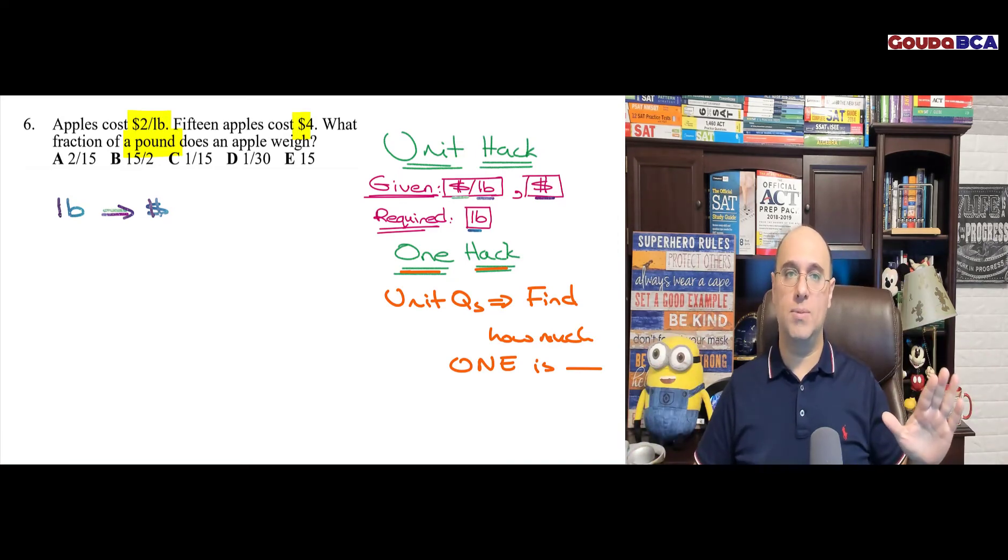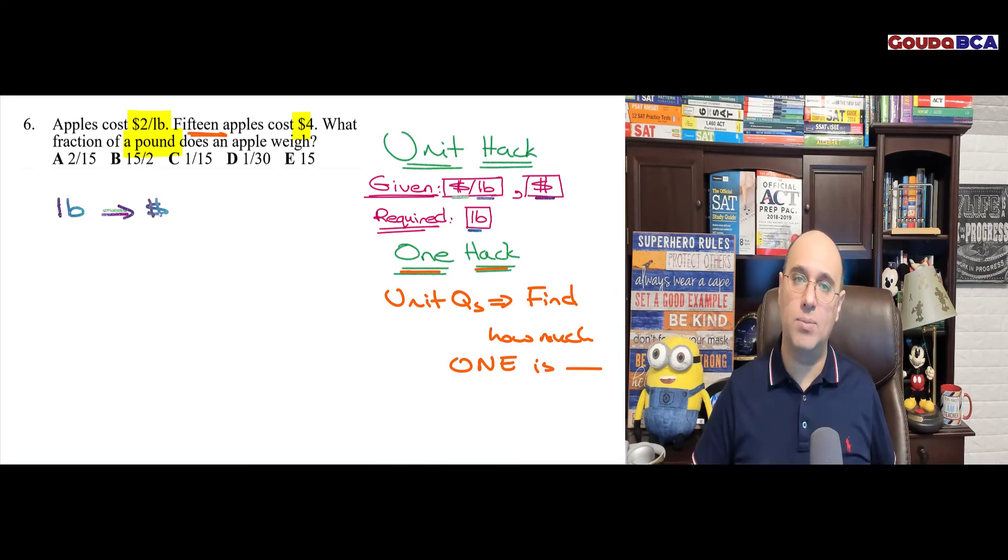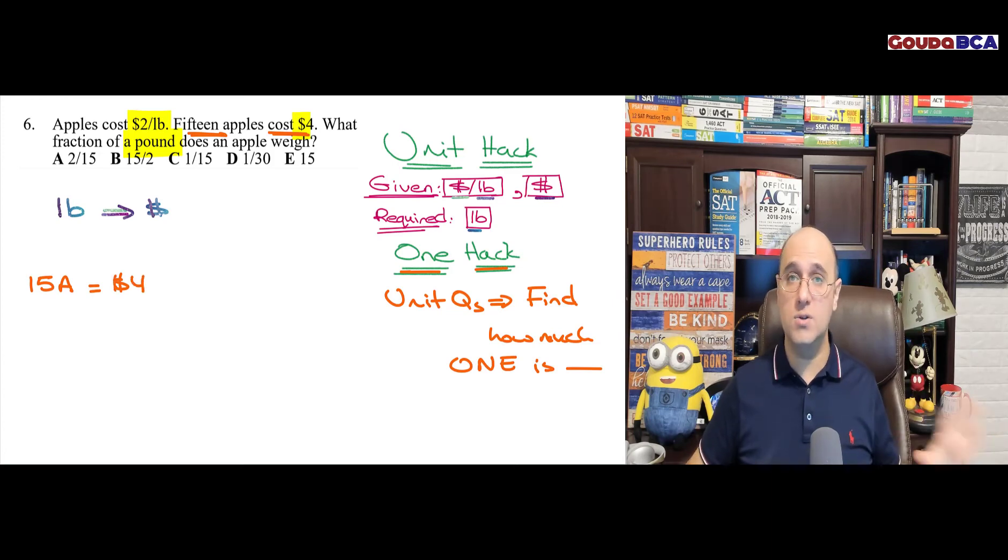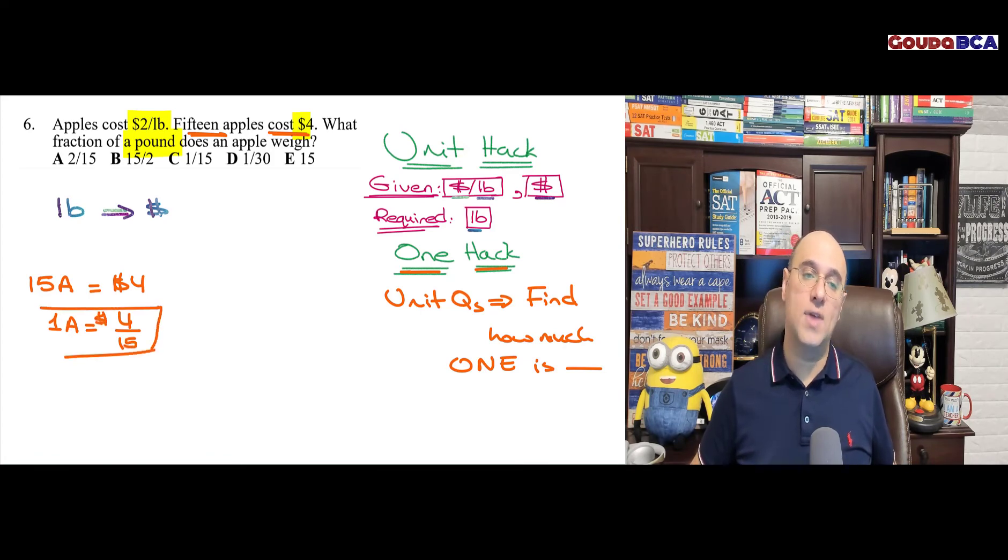Apples cost $2 per pound, 15 apples cost $4. So the first thing I need to think about, one hack, I know that 15 apples equals $4. The first thing you need to do automatically is find out how much one apple equals or costs, $4 over 15. That's it.